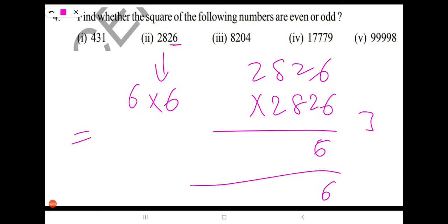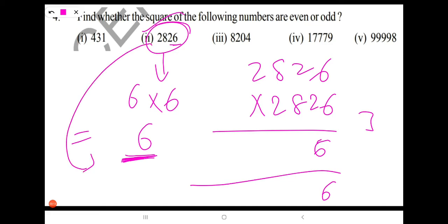6 into 6 — you will get 6 in the units place after squaring. The square of 2826 has 6 in its units place. Since 6 is an even number, the square of 2826 is an even number. The square of 2826 ends with an even digit. I hope you understand.